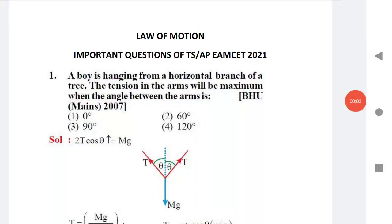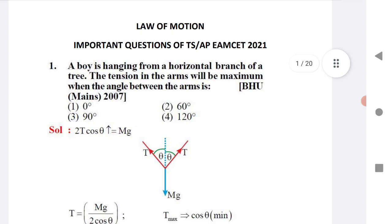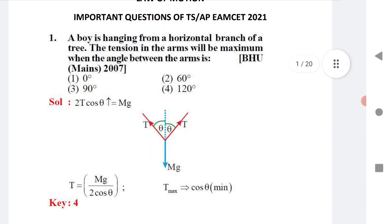Welcome to STA Academy. Today we are going to discuss laws of motion important questions for TS and AP EAMSET 2021. Before starting, I would like to tell you that units of measurement, physical world, motion in a straight line, and motion in a plane — all MCQs have been given. In this video we are going to discuss important MCQs of TS EAMSET 2021.